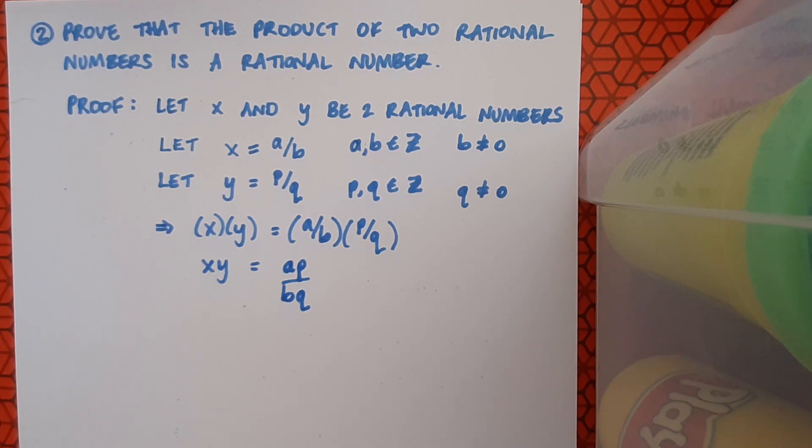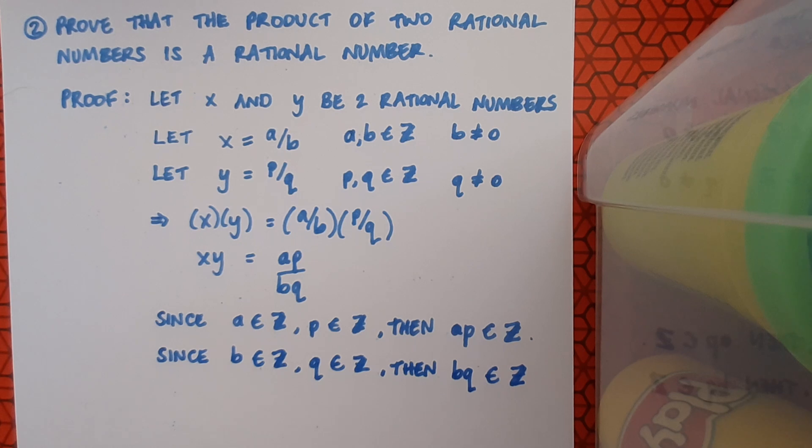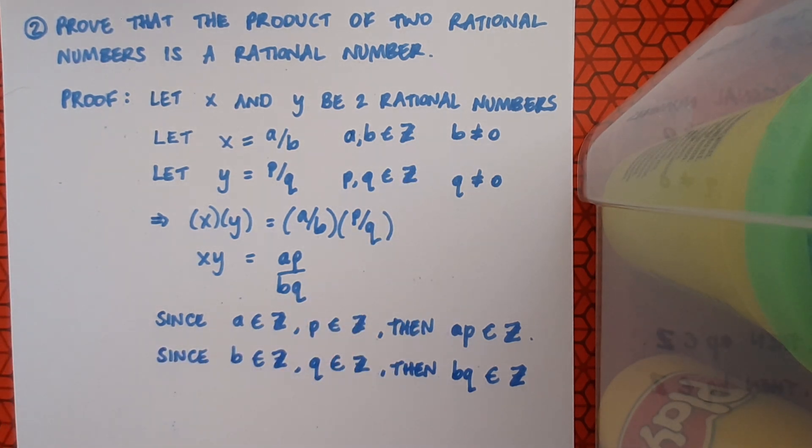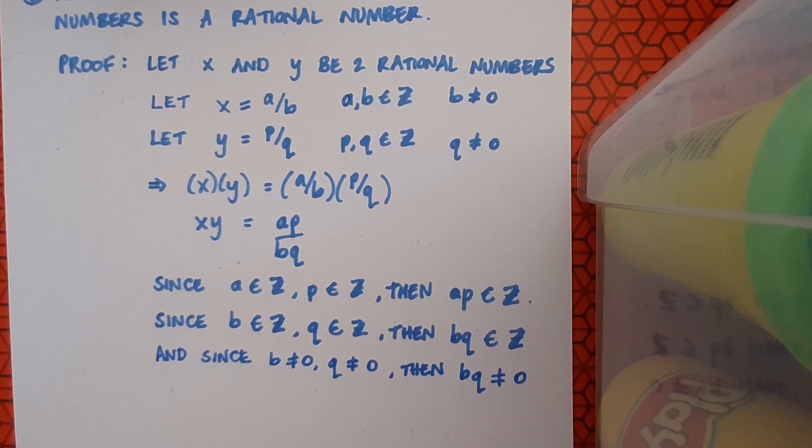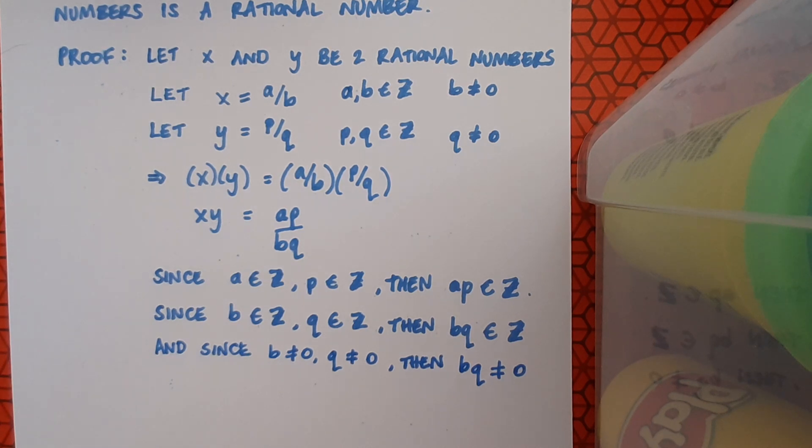So now I need to consider what ap might be and what bq might be. So a was an integer and so was p, and when I multiply two integers together I get an integer. So I'll state that since a is an integer and p is an integer, then ap must be an integer. And since b is an integer and q is an integer, then bq is an integer. So I've got an integer over an integer. And I still just need to make a statement about the denominator of this fraction not being 0, because that would complete my requirements for a rational number. And if we recall, we said that b and q, neither of them was 0. Since b isn't 0 and q isn't 0, well then they can't multiply to give me a 0 value.